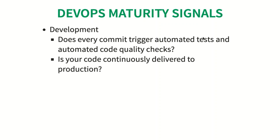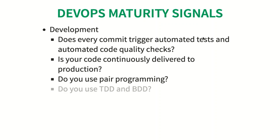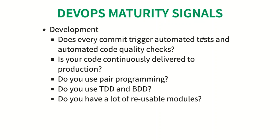If your code is getting continuously delivered to production, that means you have amazing automation tests and amazing processes. Another great question is: do you use pair programming, test driven development, and behavior driven development? Teams which use pair programming, TDD, and BDD produce really high quality code.